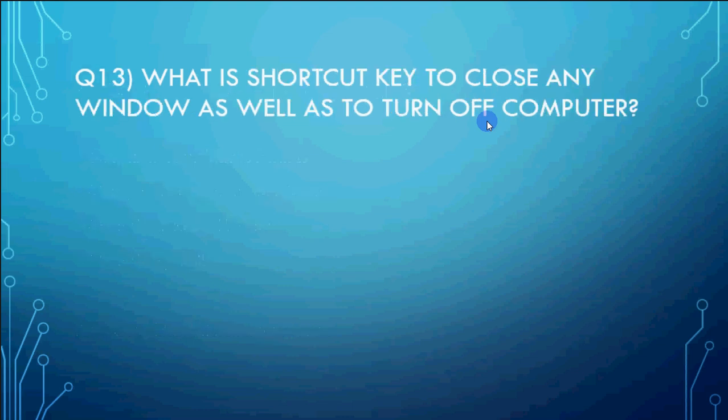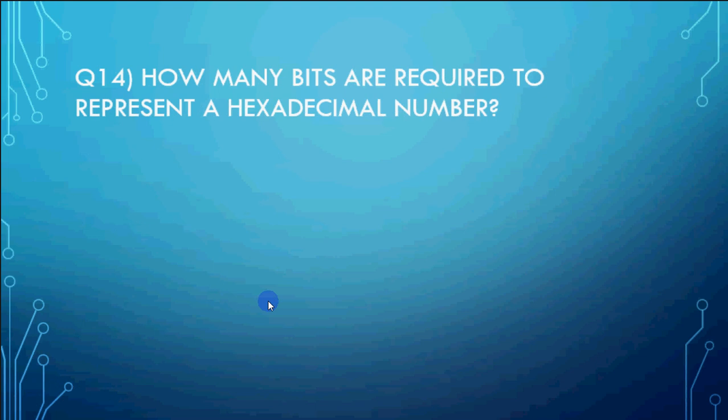What is the shortcut key to close any window as well as to turn off computer? So aapke koi bhi window close kerne hai with the help of keyboard shortcuts ya even system turn off karna agar koi bhi window open nahi hai. To kya shortcut key hum use karte hai uske liye? So jo shortcut key hum use karte hai that is Alt and F4 together. So Alt plus F4 means jab aap Alt aur F4 ko ek saath press karenge to aapke window close ho jaati hai. Agar koi bhi window open nahi hai to system ko turn off kerne ke liye use hota hai.